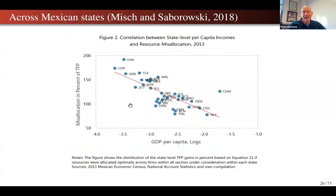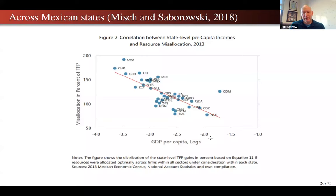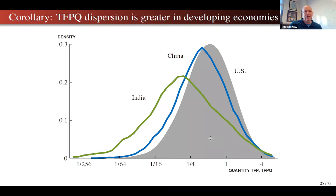A study across Mexican states shows that states with higher GDP per capita have less dispersion in TFPR across firms, associated with less misallocation in richer states. This is broad suggestive evidence that misallocation might be bigger in developing countries and contributing in a sizable way to income gaps — not just from country-by-country calculations, but from this cross-regional pattern.